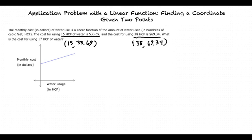We want to know what the cost is when we have 17 HCF of water. So we have X at 17, and we want to figure out what Y is. Because this is an increasing function, we know that the cost will be somewhere between $33.69 and $69.34.